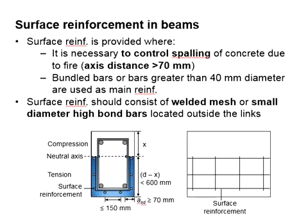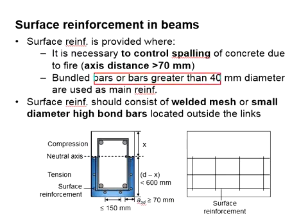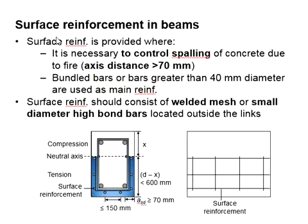Surface reinforcement is provided when the axis distance is more than 70 mm. The purpose is to control swelling of concrete due to excessive thickness of cover without reinforcement. Or, when you are using a reinforcement bar greater than 40 mm diameter, surface reinforcement is required.